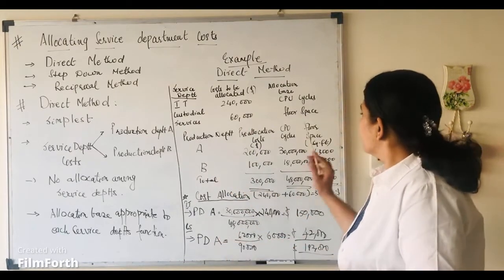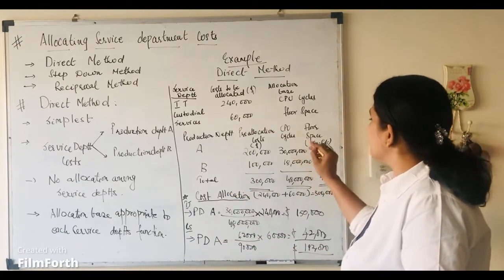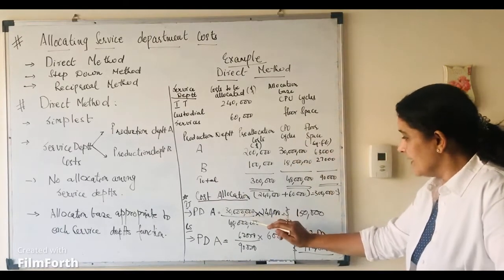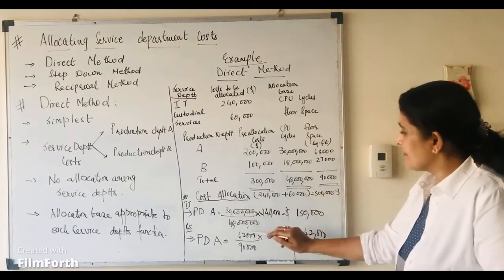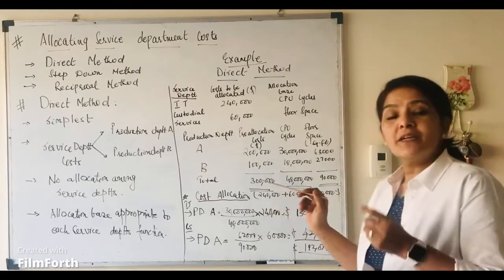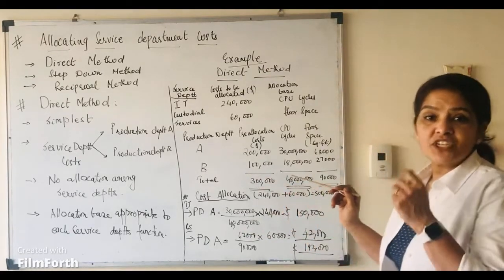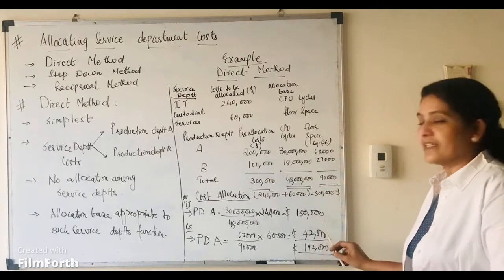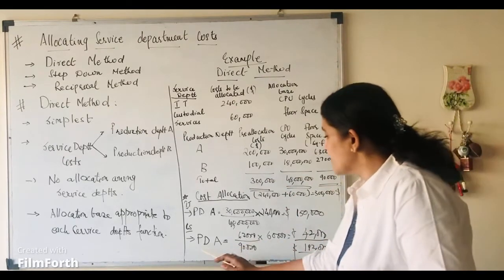Production department A has used up 30 million CPU cycles. So, 30 million divided by the total CPU cycles into the cost of the IT department that has to be allocated to production department A. That comes to $150,000.